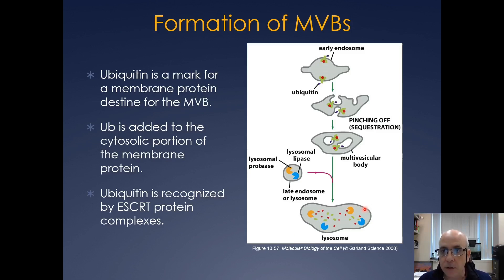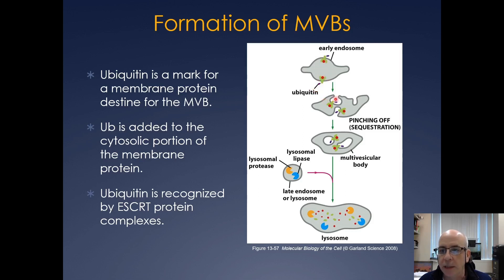Now the formation of the multivesicular bodies actually requires ubiquitin. So here you have your early endosome with a receptor, and the receptor is actually going to get packaged into a multivesicular body. The receptor will get ubiquitylated and that is a signal for it to basically get packaged into this invaginated vesicle.